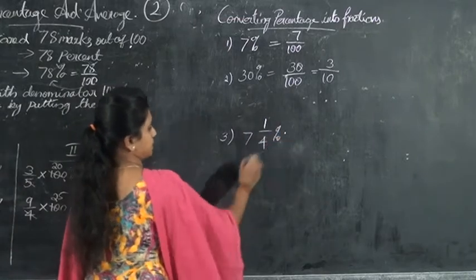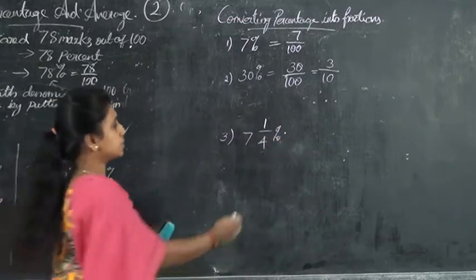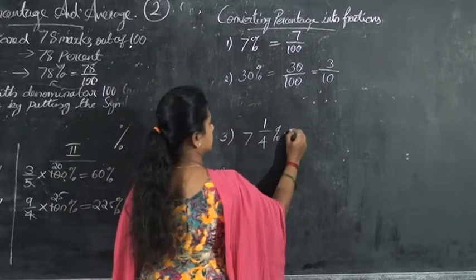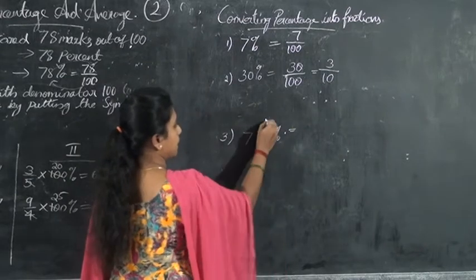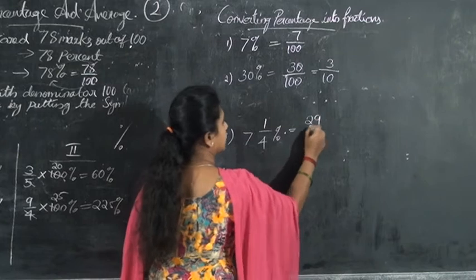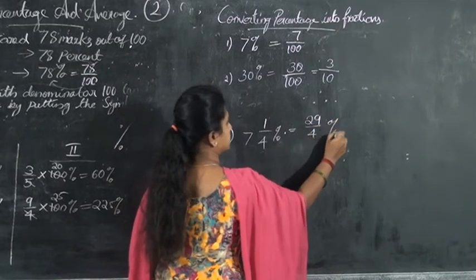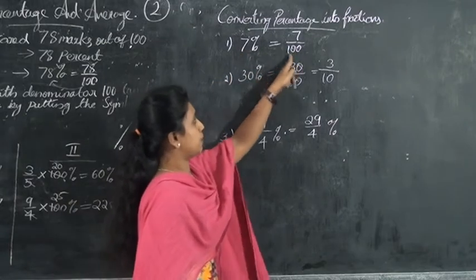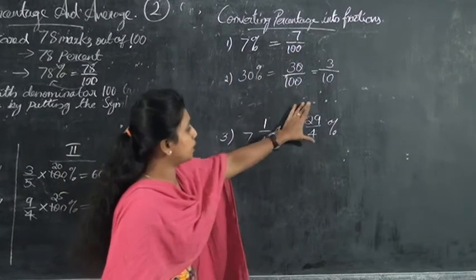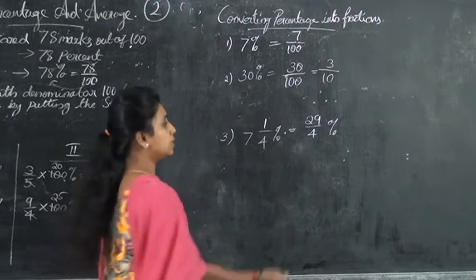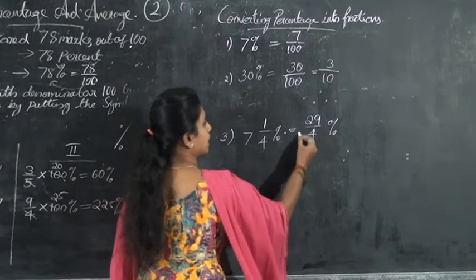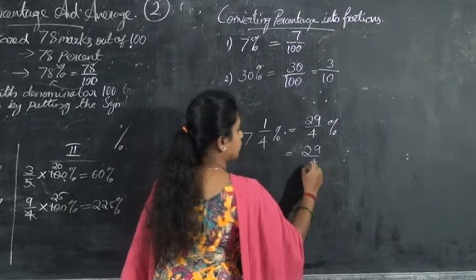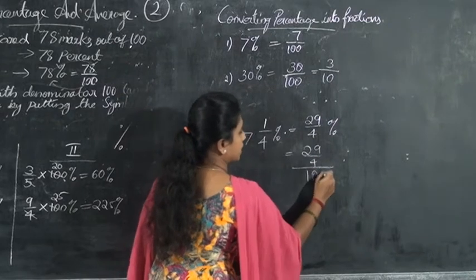Next, 7 and 1 by 4 percent — that is 7¼%. This is a mixed percentage. First convert the mixed number to an improper fraction: 4 times 7 plus 1 equals 29, so it becomes 29 by 4 percent.